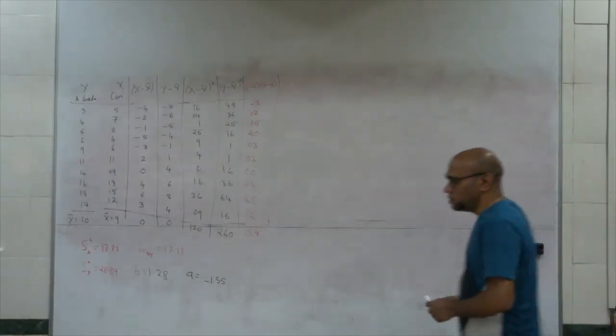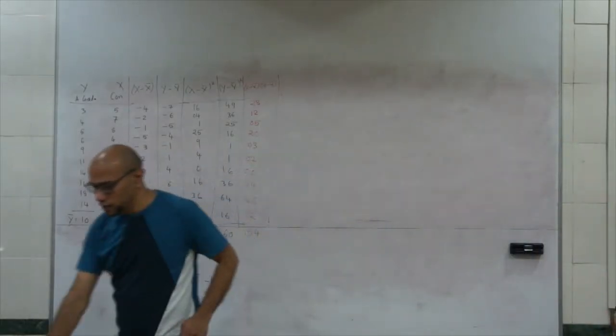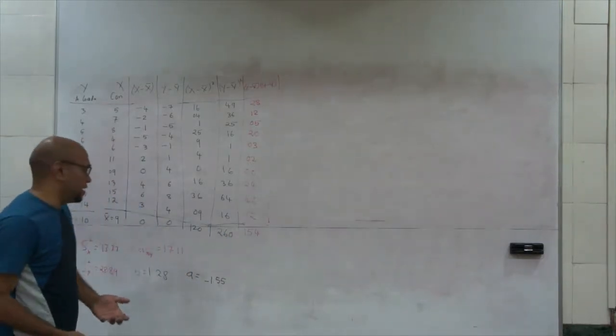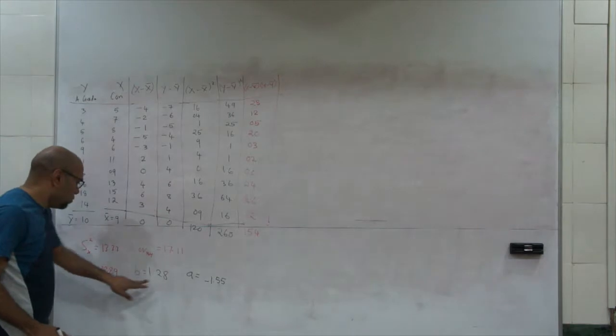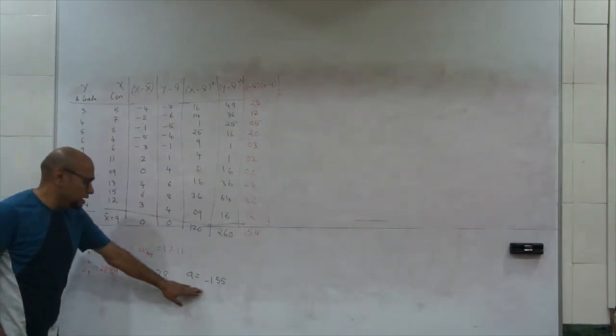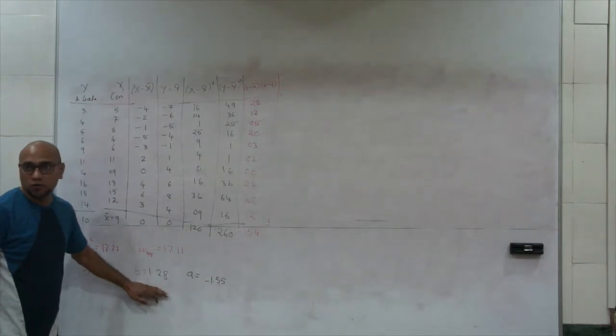Now my next job is to interpret these values. So let's quickly interpret them. B is 1.28. Let's interpret A. Let's interpret B. So I can say that the regression coefficient is 1.28. What does it mean?